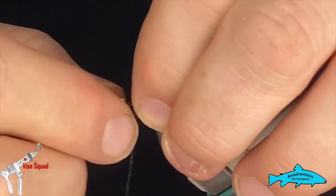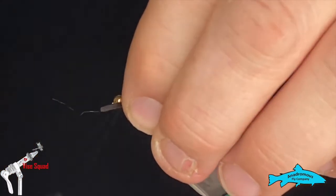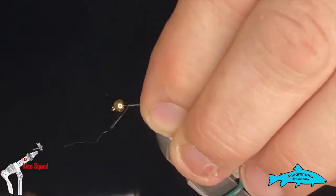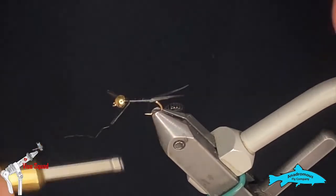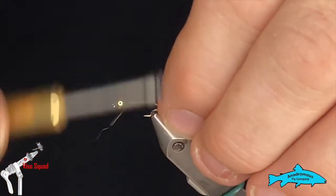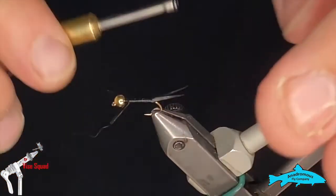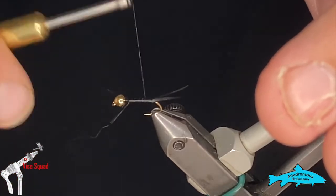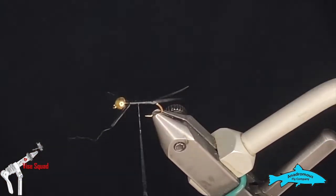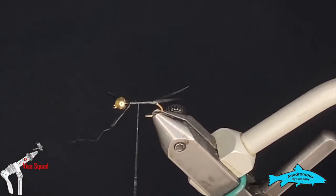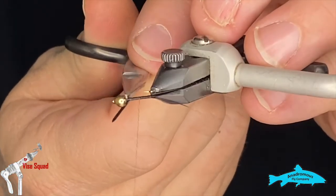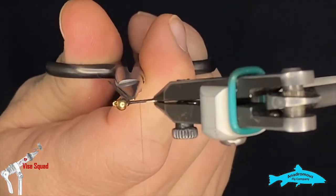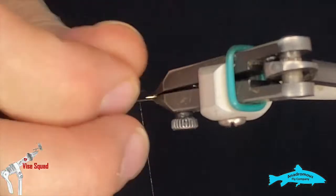While you wind forward, otherwise they'll slip and slide on you in my experience. You can tie them in one at a time if you prefer. I find that more difficult, but sometimes it's a little easier. I'll reach in there and get rid of the butt ends of those biots.